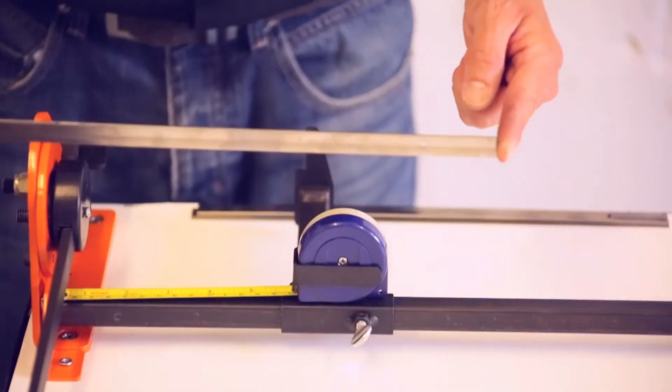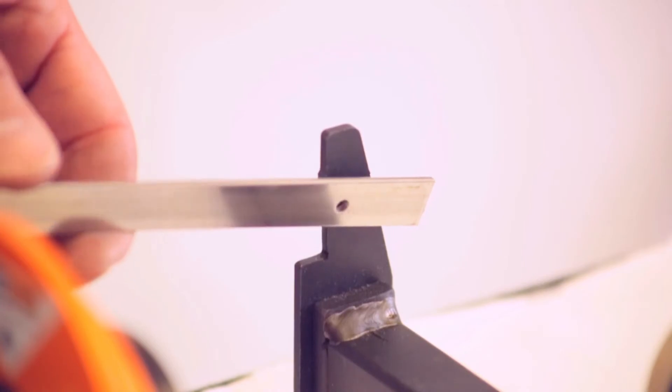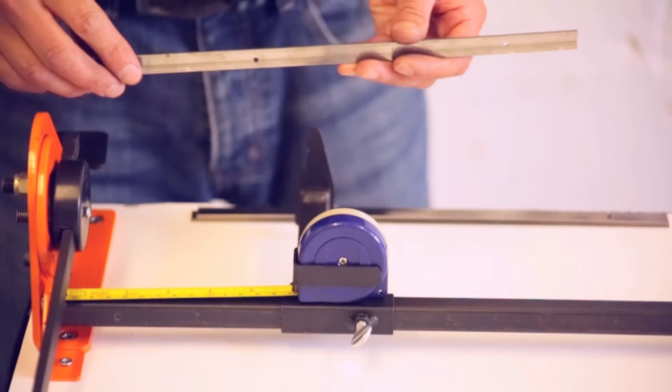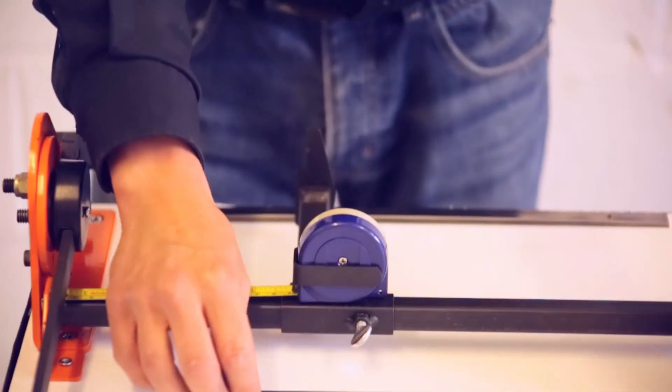Alternatively, if you wish to punch a hole at a set distance from another hole, you can set the tape measure accordingly and align the special pin on the vertical stop to the reference hole.